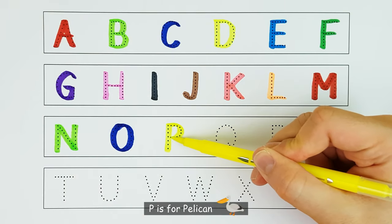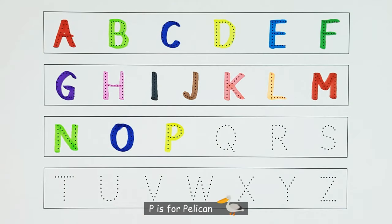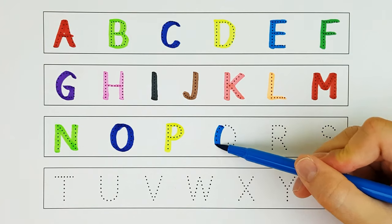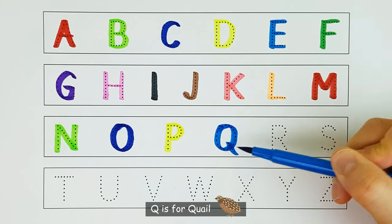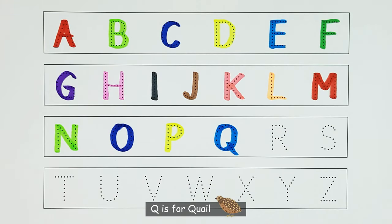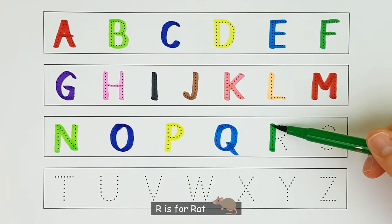P. P is for pelican. P. Q. Q is for quail. Q. R. R is for rat. R.